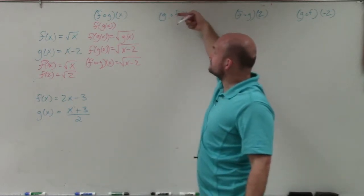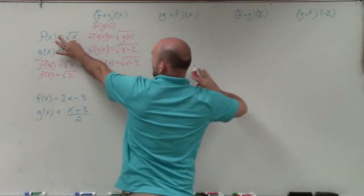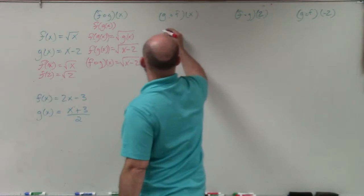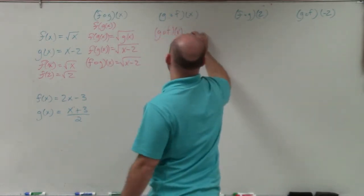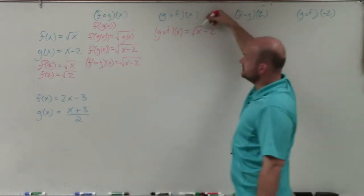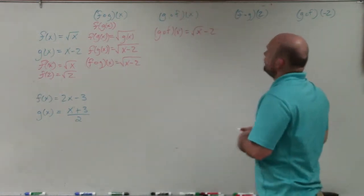So when we do a problem like this, where now we're plugging in the f of x function into the g of x function, the f of x function is the square root of x, and I'm going to plug that in for the x in the g of x function. So therefore, we can kind of quickly say, well, g of f of x is then the square root of x minus 2, right? I plugged in f of x in for the x of the g of x function.